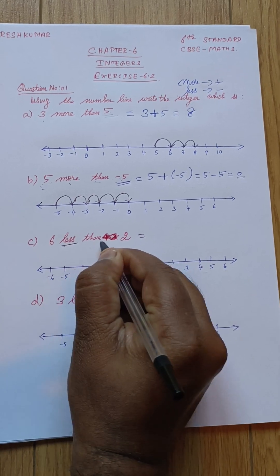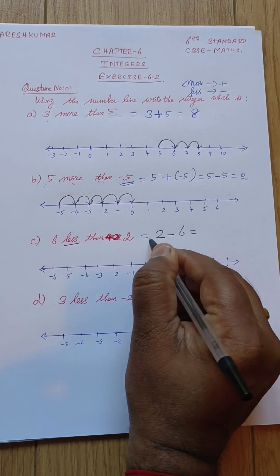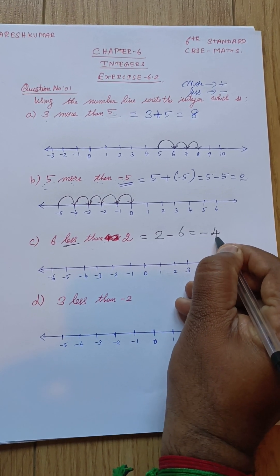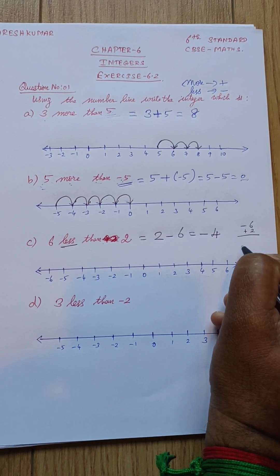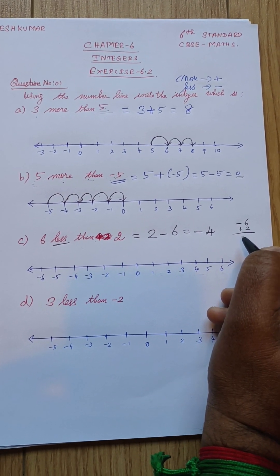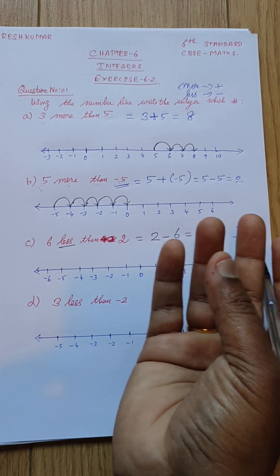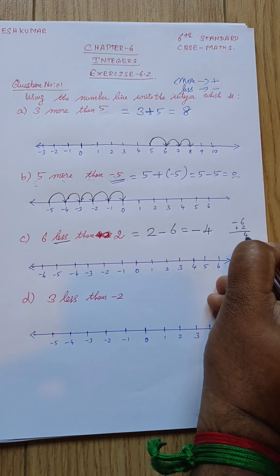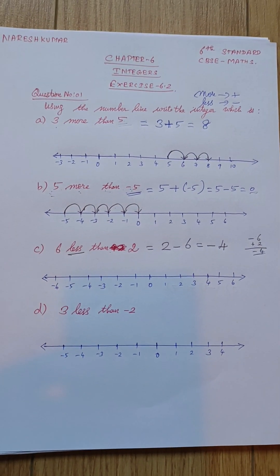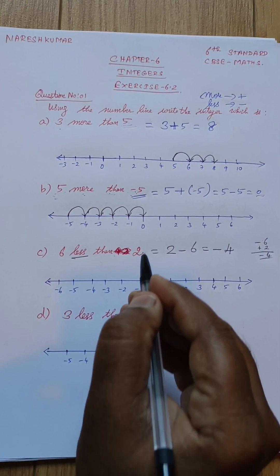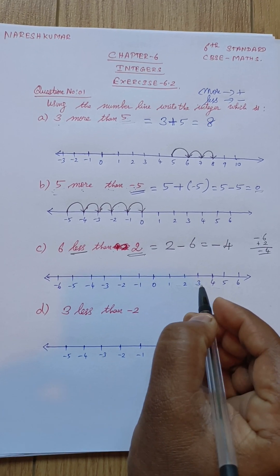Next: six less than two. 'Less' means minus, so two minus six. Minus six plus two - minus into plus gives minus, and six minus two is four, with the higher degree sign being minus, so the answer is minus four.